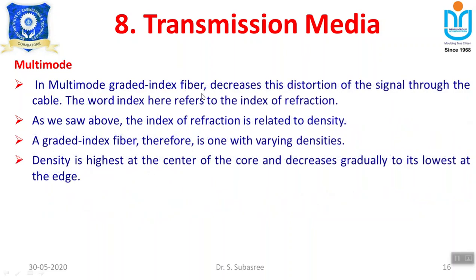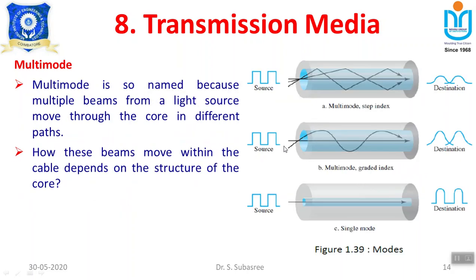Graded index fiber decreases the distortion of the signal through the cable. The word 'index' here refers to the index of refraction, which is purely related to density. The density varies at different levels and the light travels through the path accordingly. Density is highest at the center of the core and decreases gradually to the lowest at the edge. In the center part, the clarity is highest; as it goes toward the edge, clarity decreases.